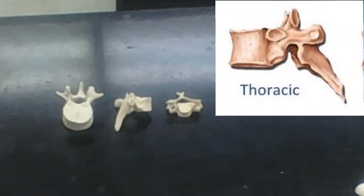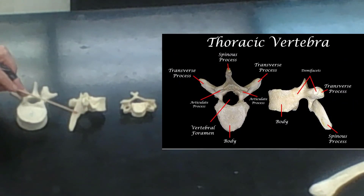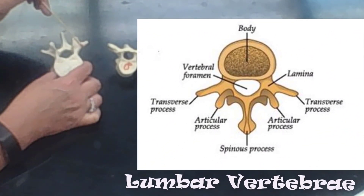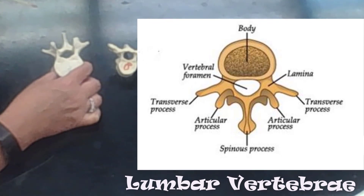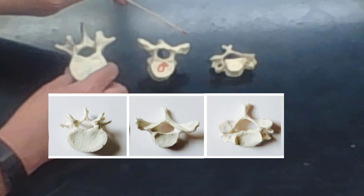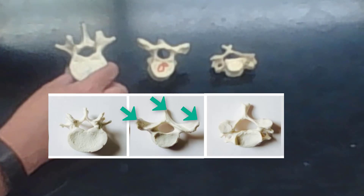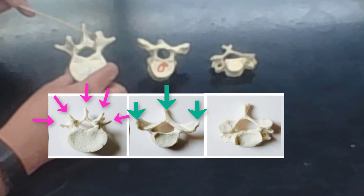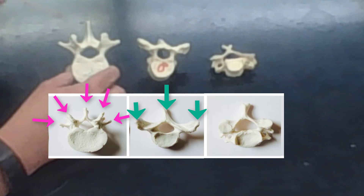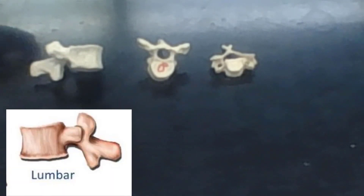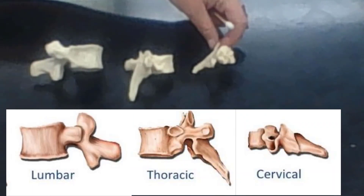When viewed straight on, the thoracic vertebra shows three distinct processes: two transverse processes and a spinous process. The lumbar vertebrae have pronounced transverse processes and very pronounced articular processes, giving five distinct processes visible from above: two transverse, two articular, and one spinous. The spinous processes of the lumbar vertebrae are rounded, which is a clear distinguishing feature compared to the other vertebral regions.